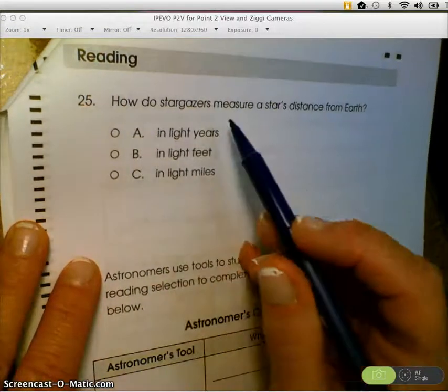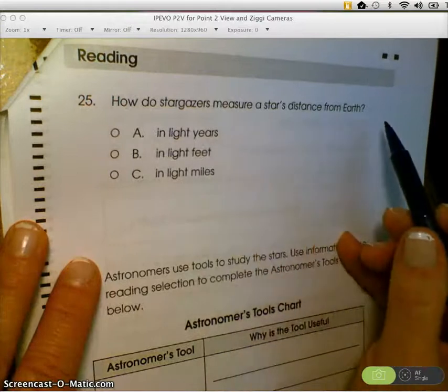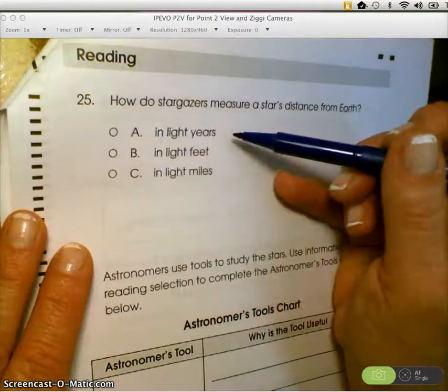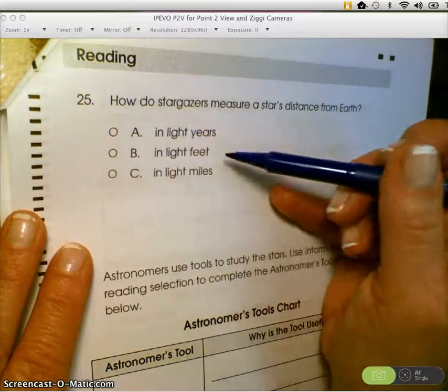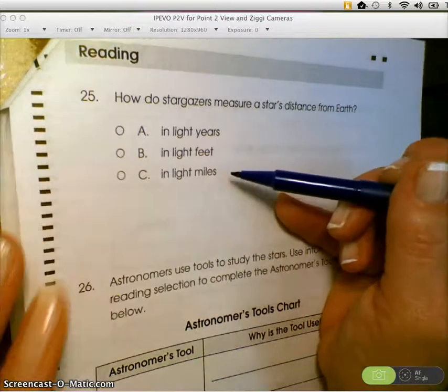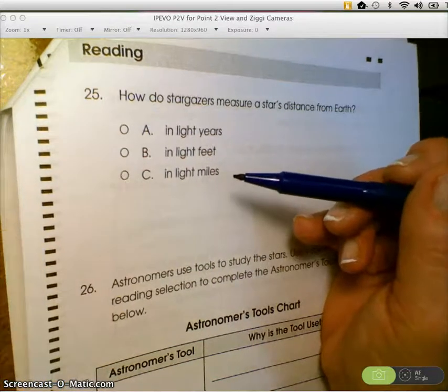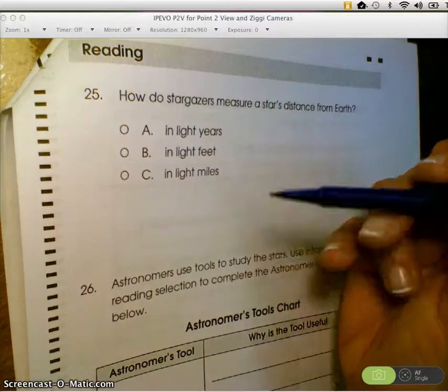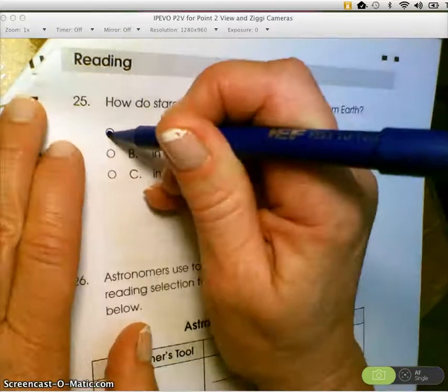Flip to question 25. How do stargazers measure a star's distance from Earth? Do they measure that distance in light years, in light feet, or in light miles? And this one, you can go back and look, is right in the passage. It talks about stars being measured the distance in light years. So that's going to be A.